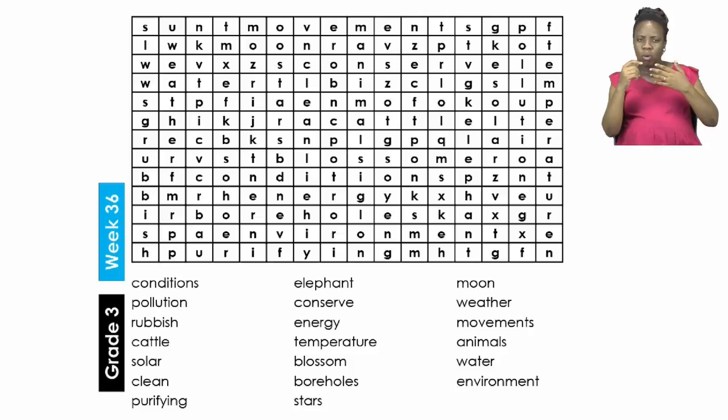They are conditions, pollution, rubbish, cattle, solar, clean, purifying, elephant, conserve, energy, temperature, blossom, boreholes, stars, moon, weather, movements, animals, water, and environment.